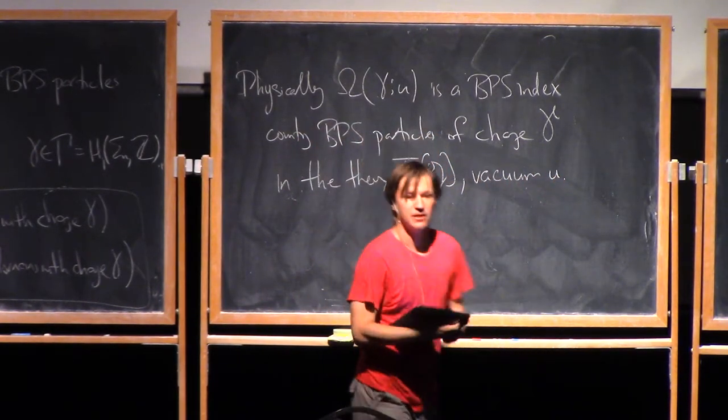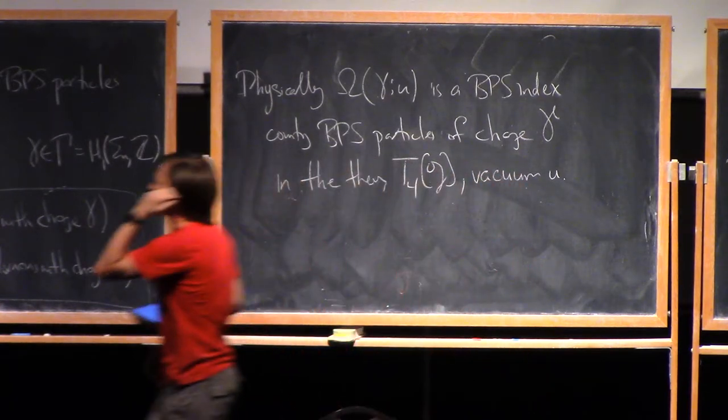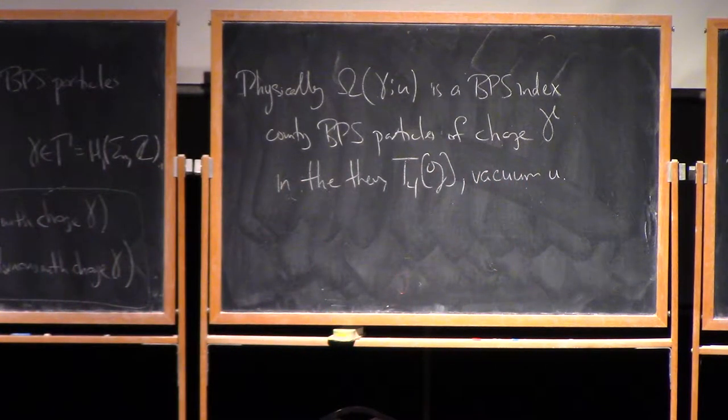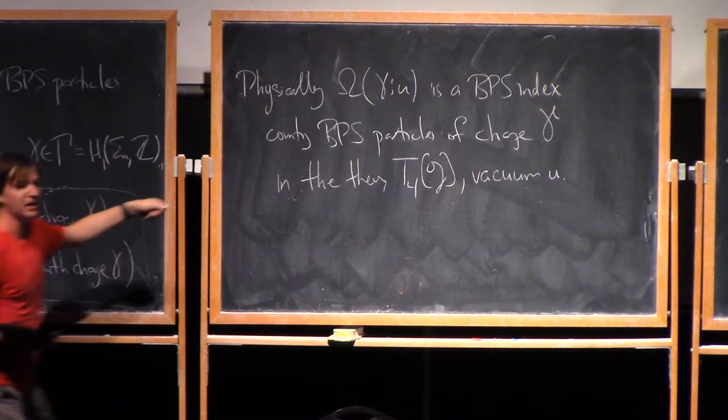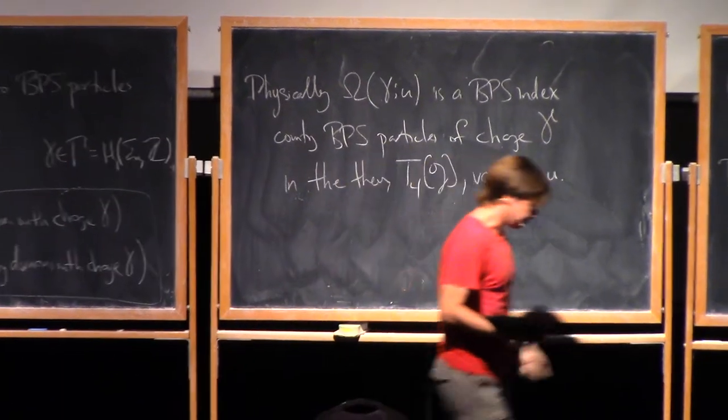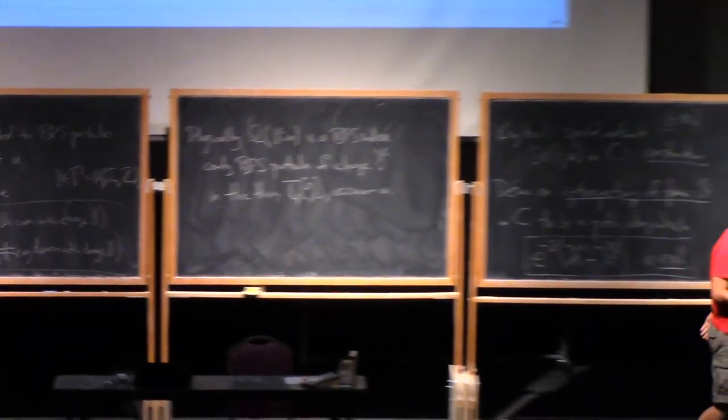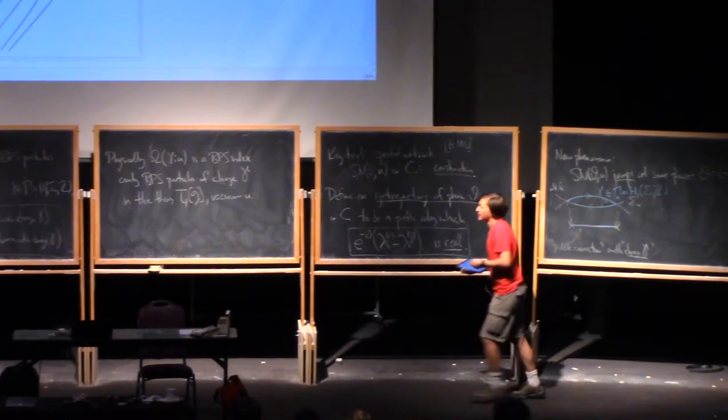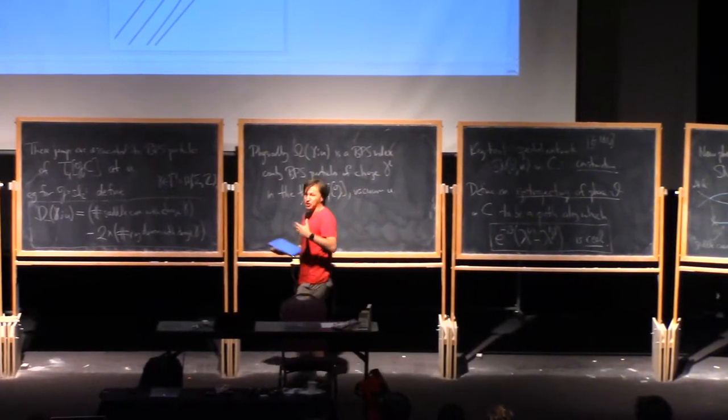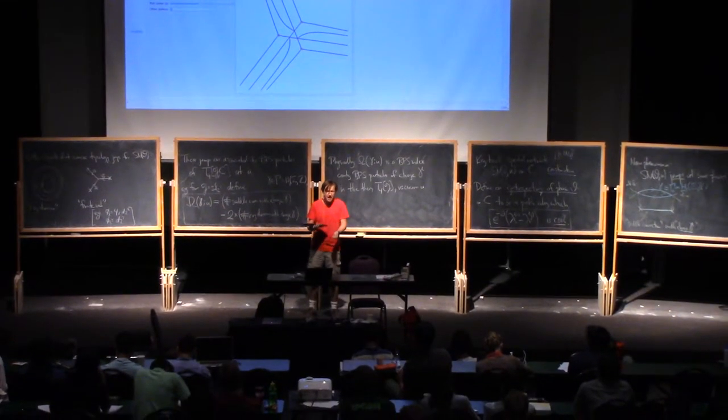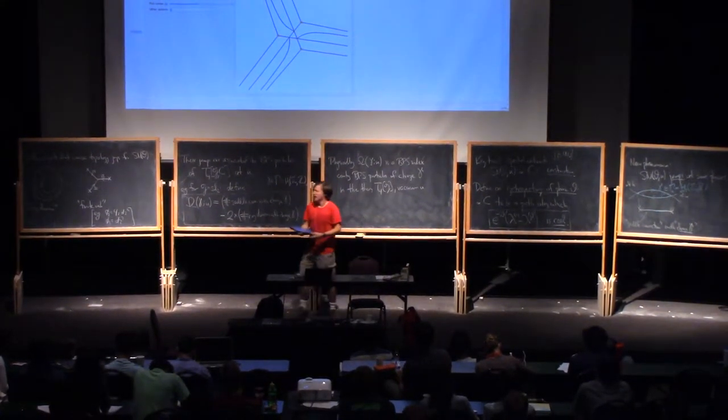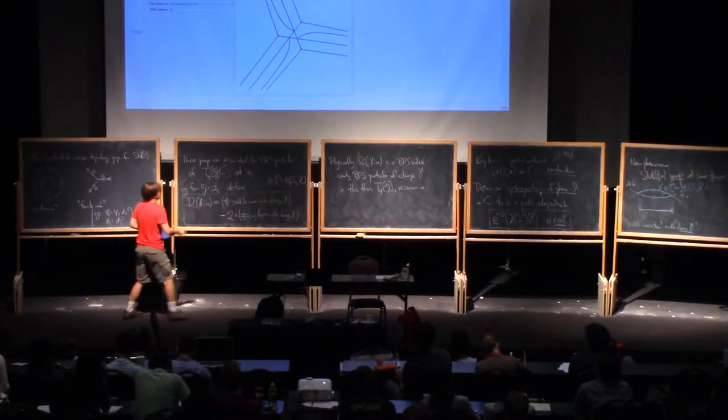Very good. So we didn't talk about it in lecture, but in the notes, I wrote down the kind of general definition of such an index in terms of the representation theory of the supersymmetry algebra in n equals 2 supersymmetry in four dimensions. And so just like the n equals 2 comma 2 situation, you count things, but you have to count things with signs, in general, in order to get an invariant.